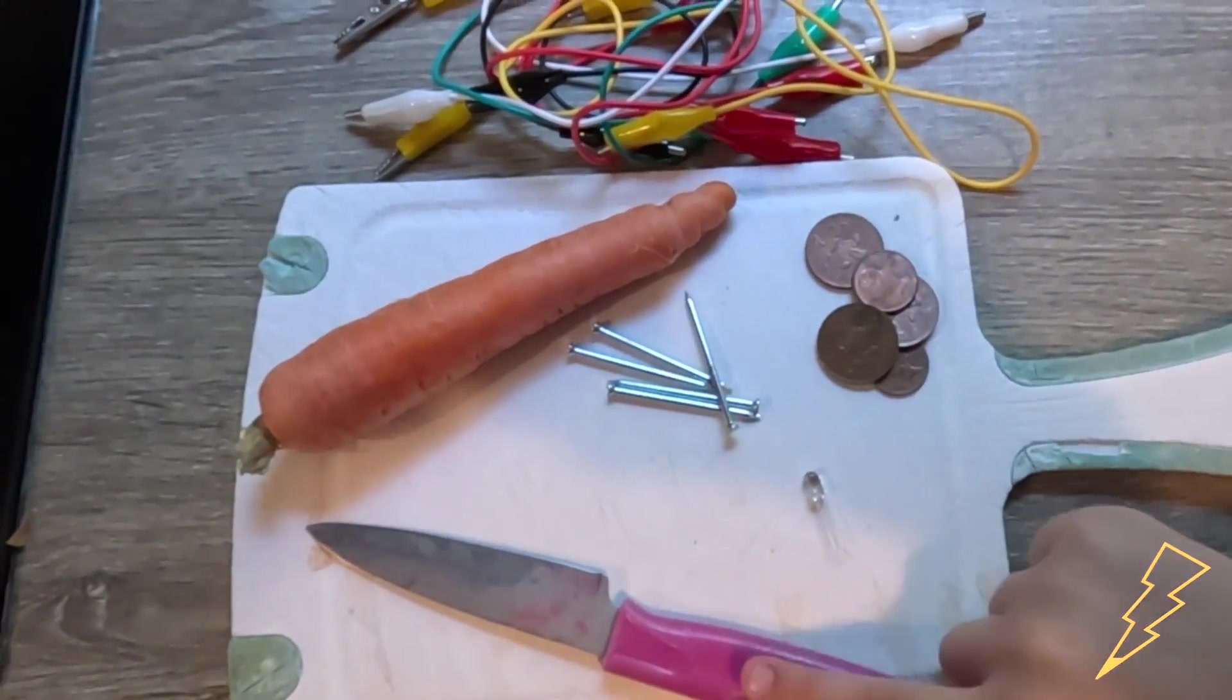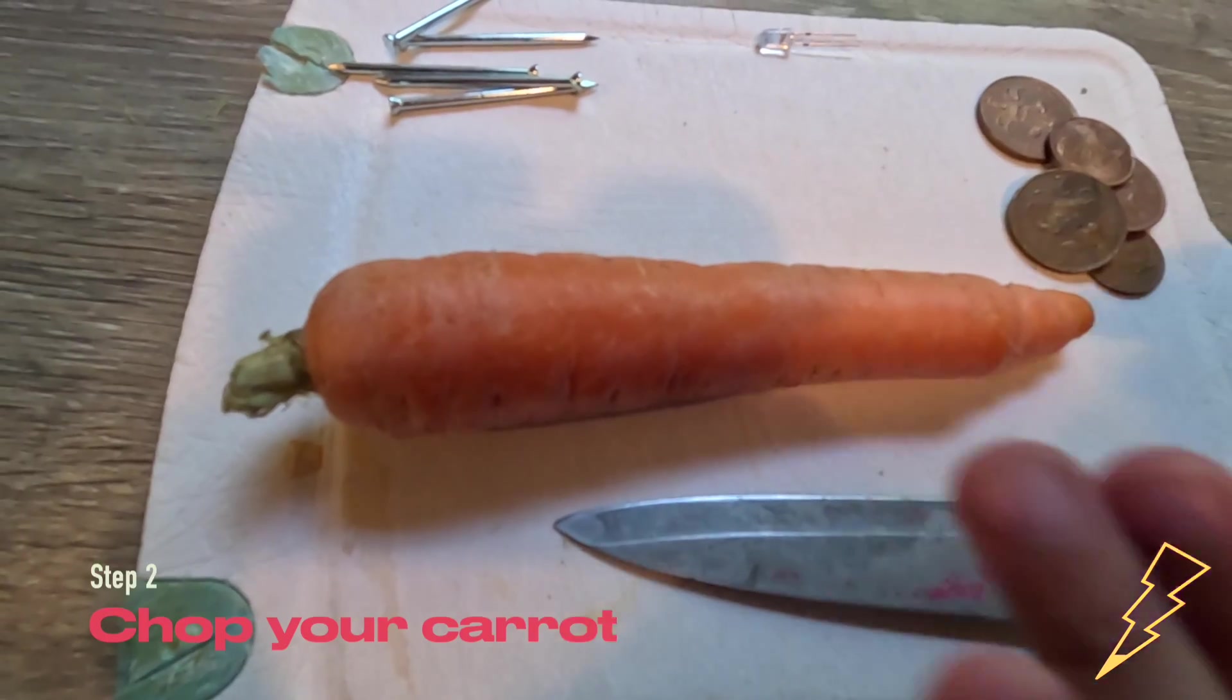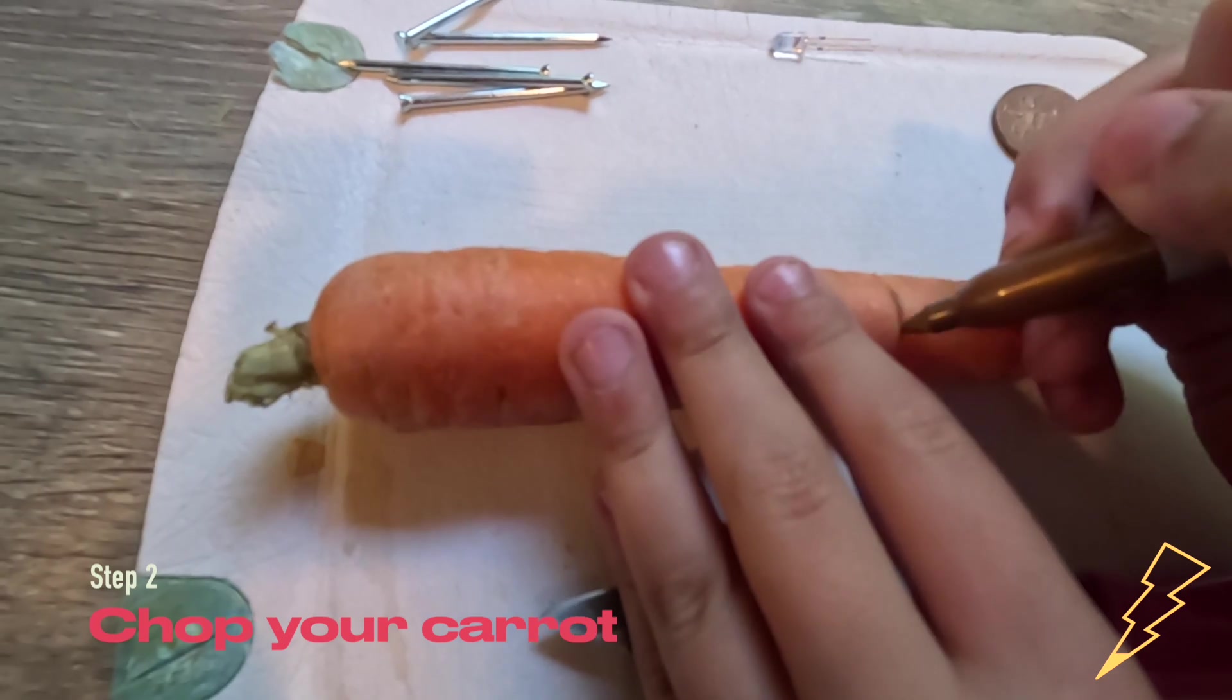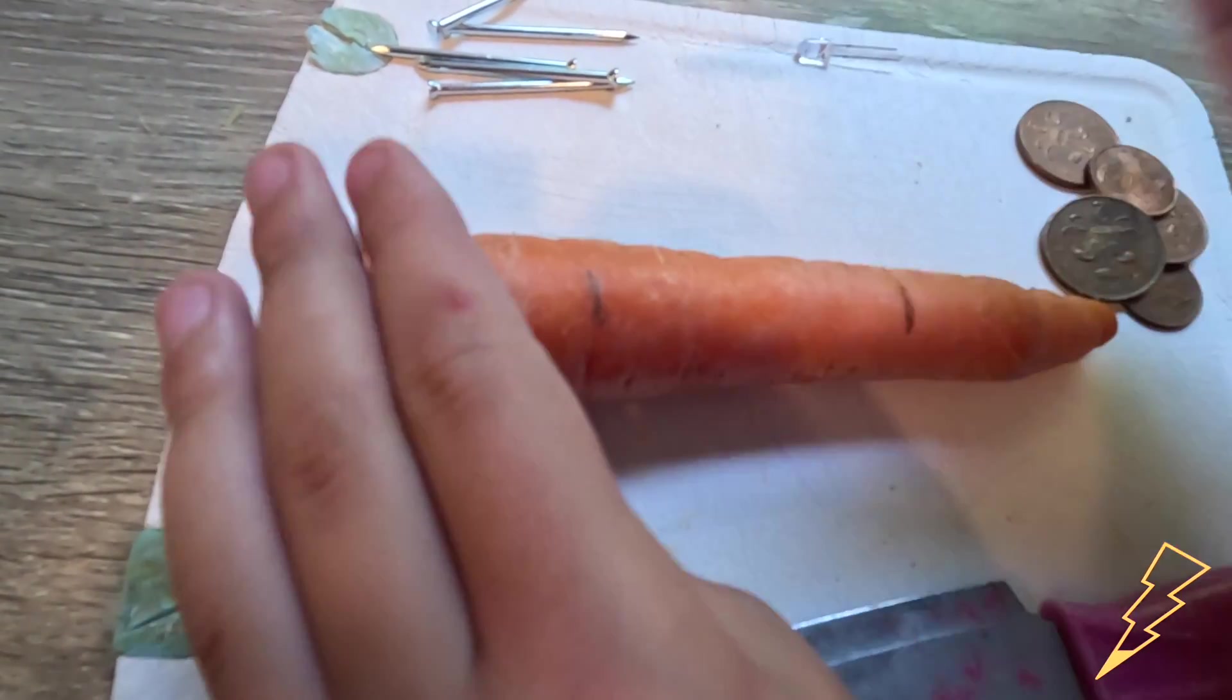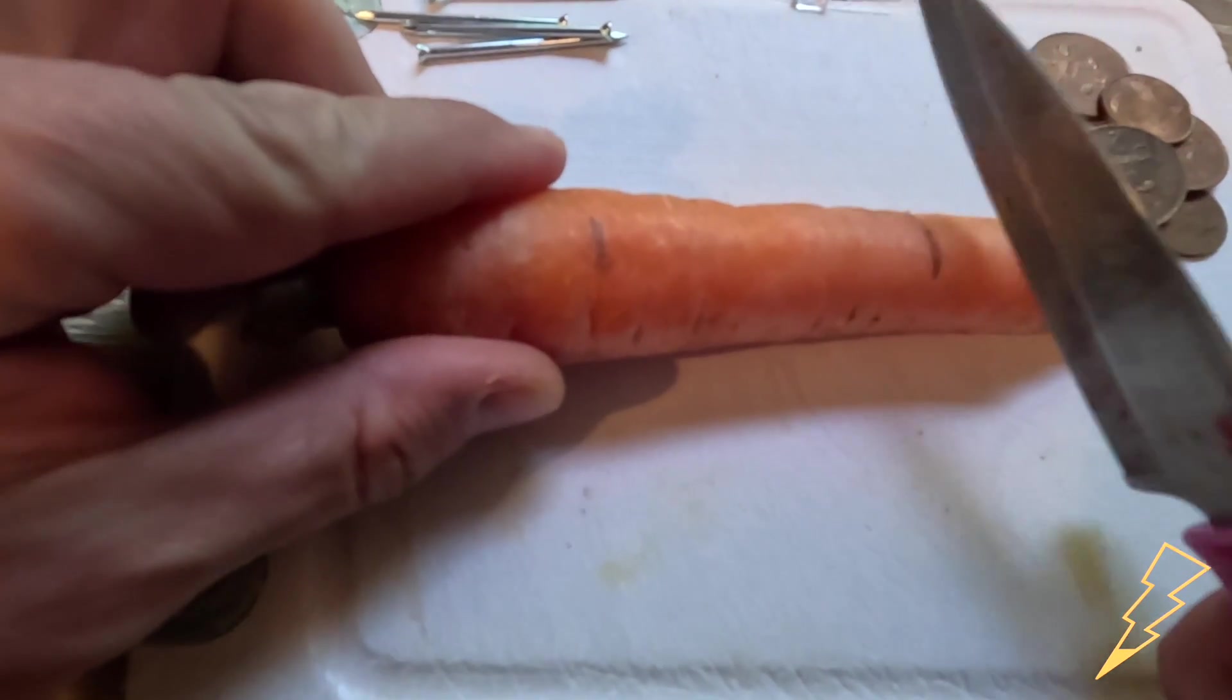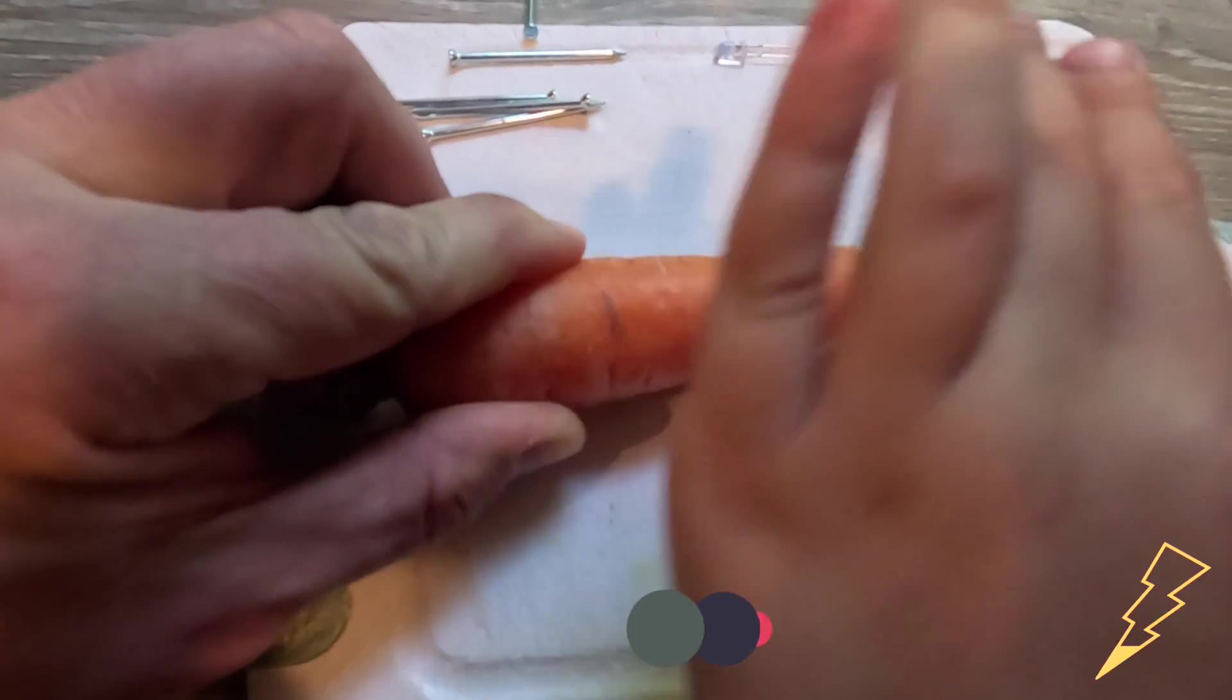You'll also need a knife and an adult to help you. First we need to cut the carrot into big chunks. You might want to mark it out with a sharpie, then take the knife and cut your chunk.